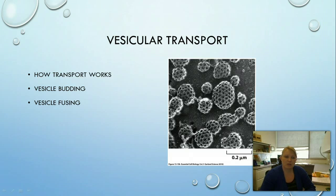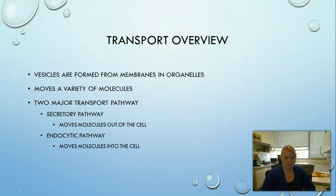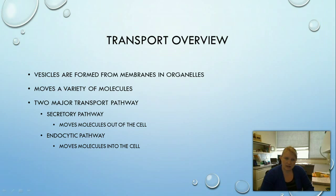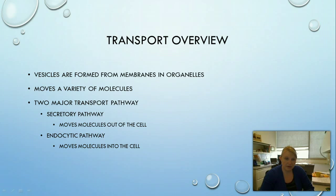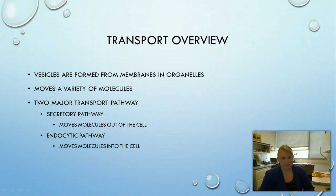We're going to talk about vesicle budding and fusion. Vesicles are formed from membranes and organelles — they are essentially little sacs and they can contain a variety of molecules. There are two main pathways that use these vesicles: the secretory pathway, which moves molecules out of the cell, and the endocytic pathway, which moves molecules into the cell. Sometimes the secretory pathway is listed as the exocytic pathway, but we're going to use the term secretory.